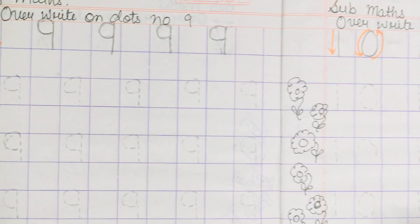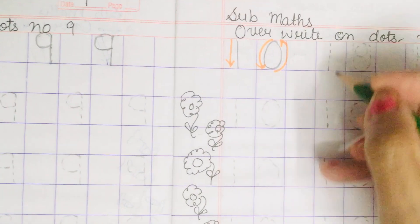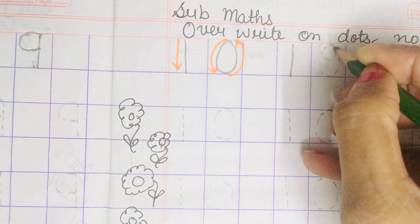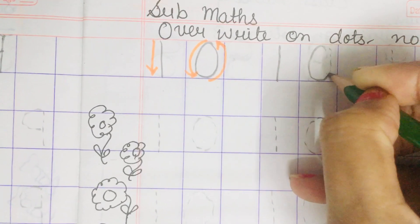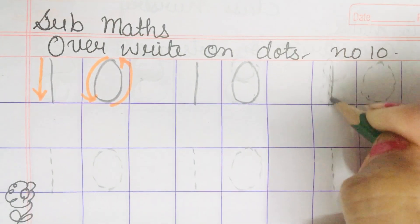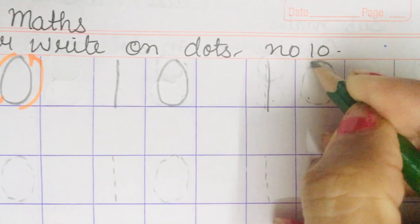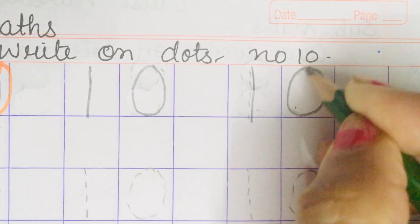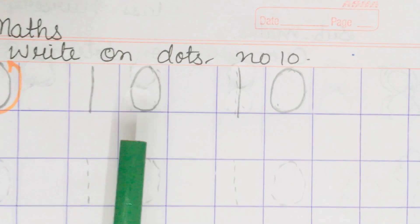Now I will teach you how to write number 10. See, we will make a standing line and a circle by joining the dots like this. Again, standing line and a circle like this. Which number is this? This is number 10.